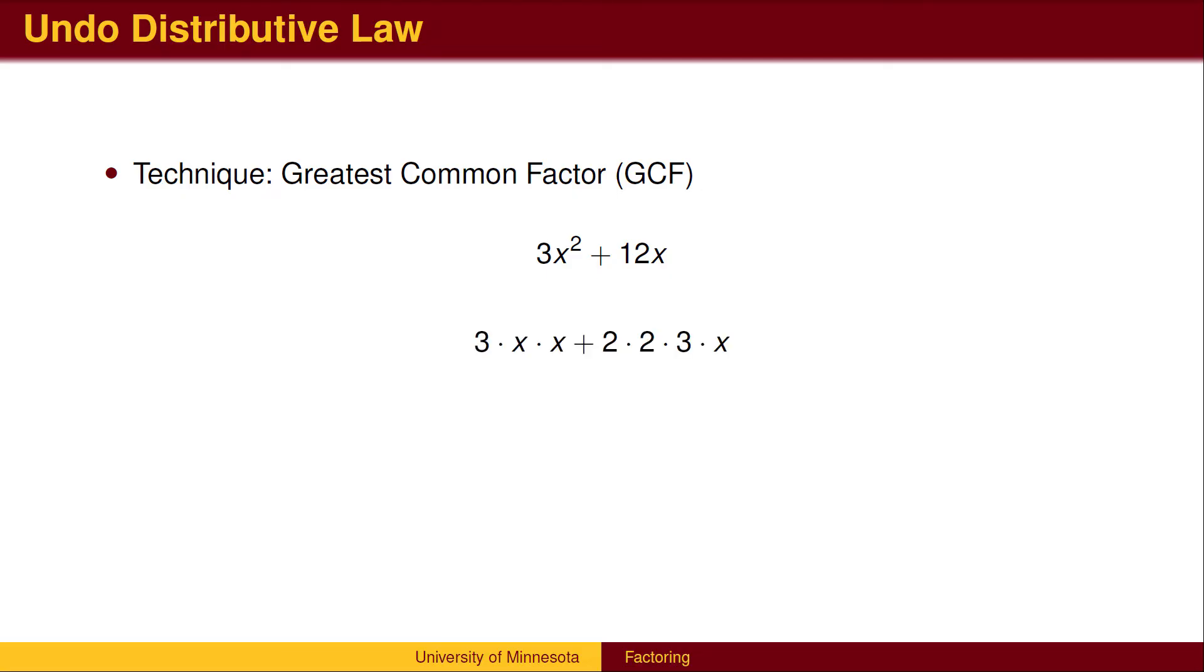Formally, we can break down each term into the smallest possible factors, its prime factors. The coefficient can be factored into prime factors. The variable can't be factored, other than to interpret the exponent as repeated multiplication. We now look for the common factors. We see each term has a factor of 3 and a factor of x, so the common factor is 3x.